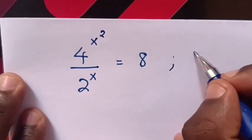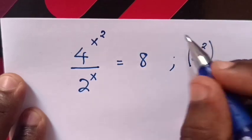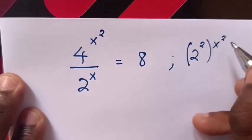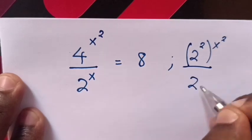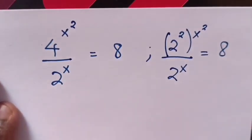4 is 2 to the power 2, bracket to the power of x squared, over the denominator 2 to the power x equals 8. Now,